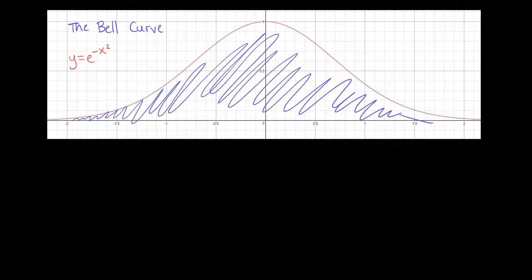If you just wrote down the integral from negative infinity to positive infinity of e to the negative x squared dx, this integral — even though it looks simple — turns out to be super daunting, and it is not at all easy to solve without numerical methods.